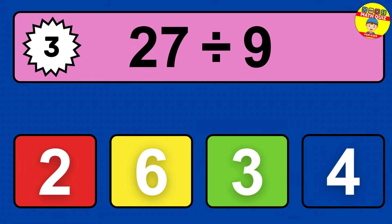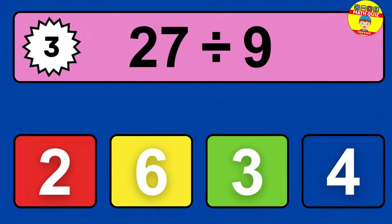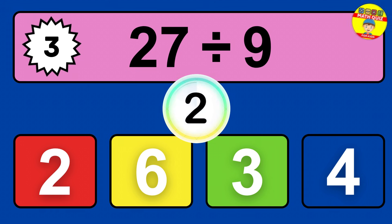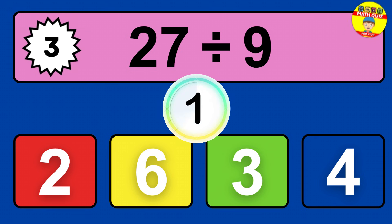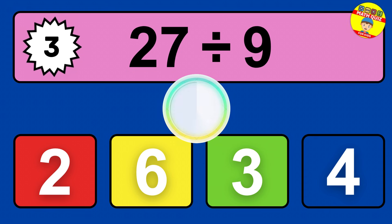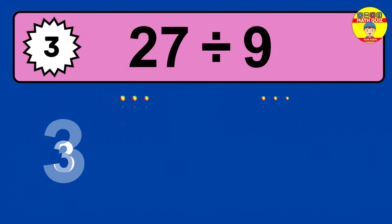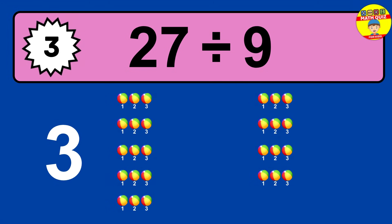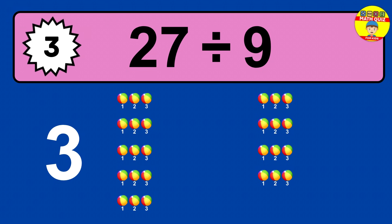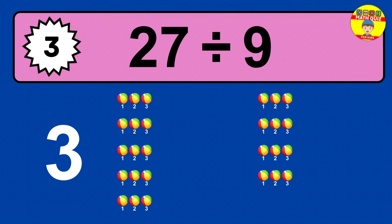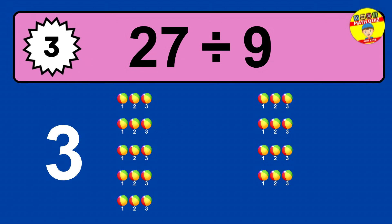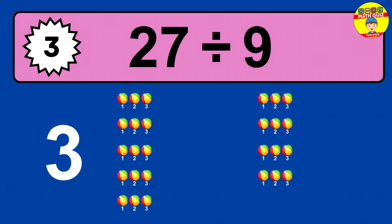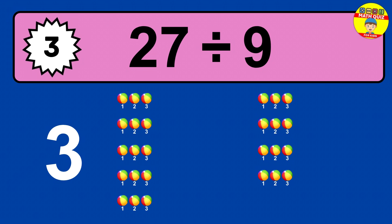27 divided by 9 — time to think. Let's go to the solution. Divide the number 27 by 9. Each group contains 9 units, so dividing 27 by 9 results in 3 equal groups. Thus, the result is 27 divided by 9 equals 3.